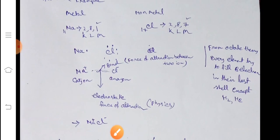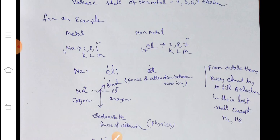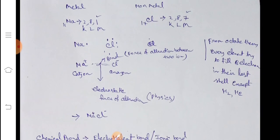And this attraction of force is called electrostatic force of attraction in the language of physics, and in the language of chemistry, we call it bond. So bond means force of attraction between two ions. So here Na+ is positive ion and Cl- is negative ion, that is cation and anion, two ions. The force of attraction between two ions is called bond.